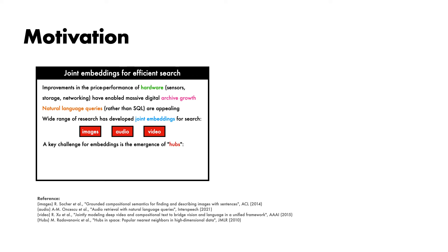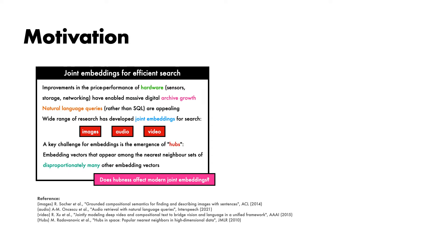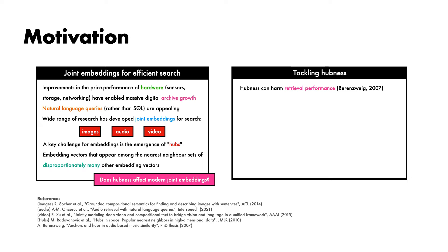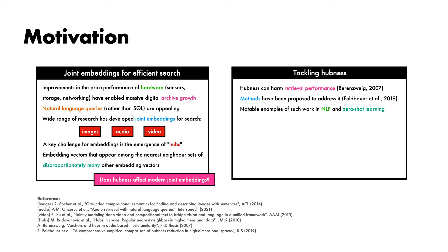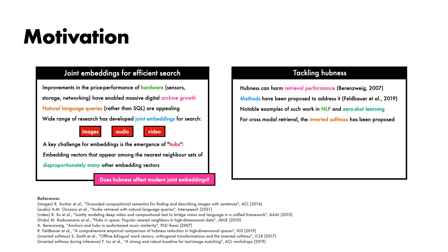However, a challenge that can arise when using high-dimensional embeddings is the emergence of hubs. These are embedding vectors that appear among the nearest neighbour sets of disproportionately many other embedding vectors. Hubness is not a new idea, but given the recent progress in joint embeddings, it is natural to ask whether hubness affects modern joint embeddings and is therefore worthy of study. The motivation for tackling hubness is that it can harm retrieval performance, and as such a range of methods have been proposed to address it, particularly in the NLP and zero-shot learning research communities. In the context of cross-modal retrieval, the inverted softmax has been proposed as one such possible solution.